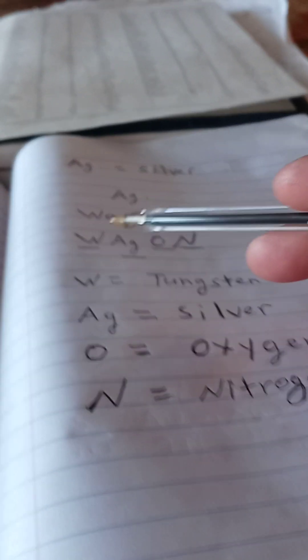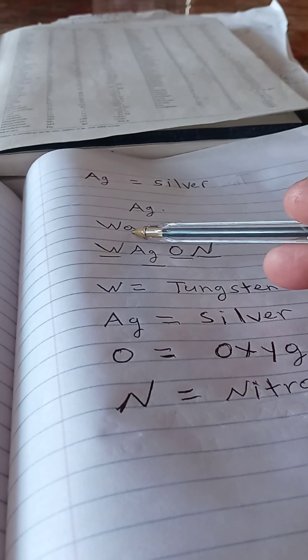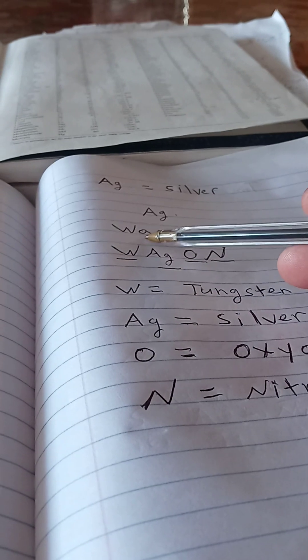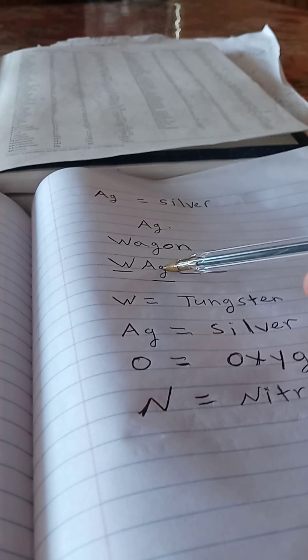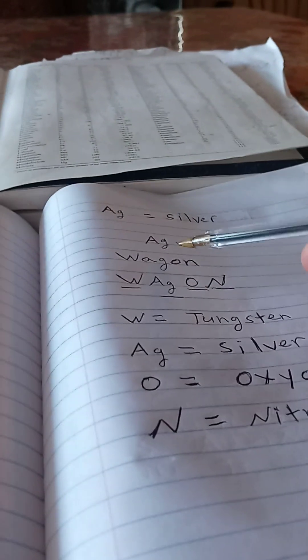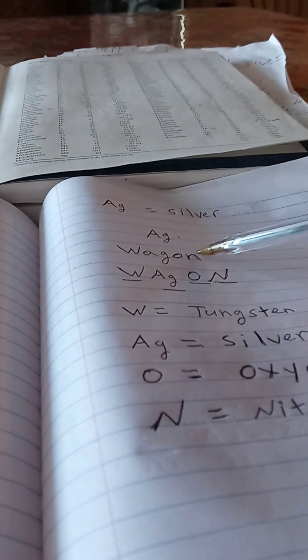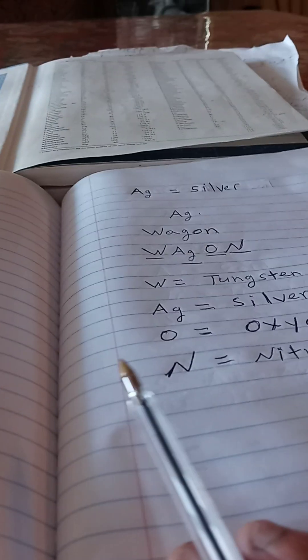You see here, I made that the capital W stays the same. The small a is capitalized, we're keeping a small g, but the A is capitalized and the G here is too small for silver, capital A and a small g for silver. We got the O with a capital O for oxygen, and the N is a capital N for nitrogen. And we got the word wagon, W-A-G-O-N.